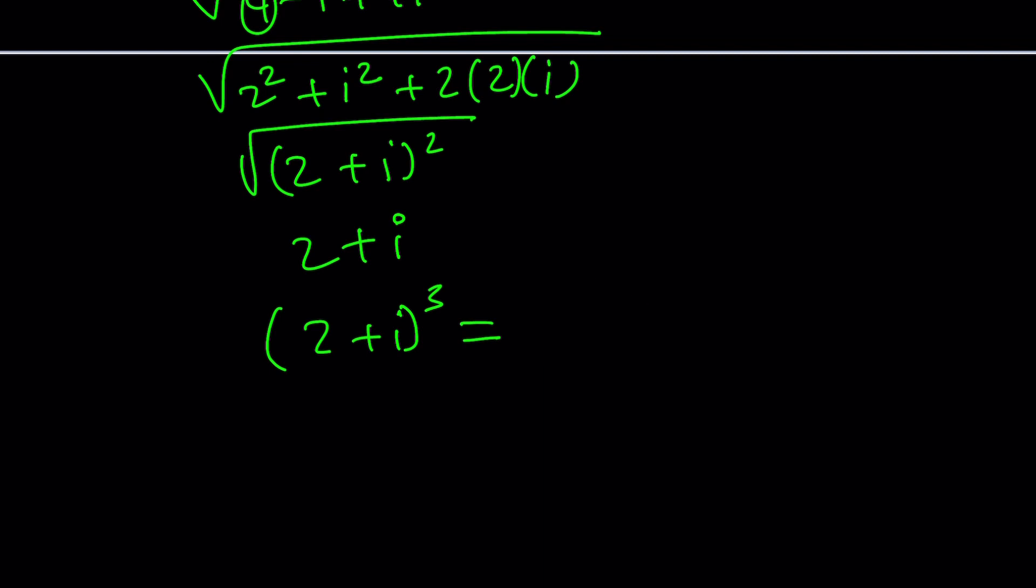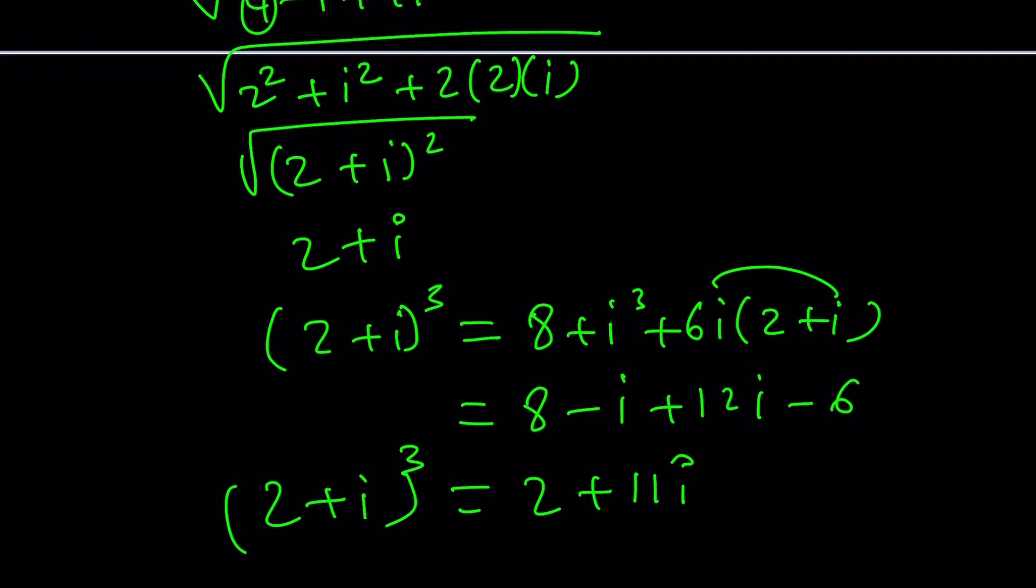Okay, let me use my formula. a cubed plus b cubed plus 3ab times a plus b. That's the formula I usually use. I don't like the binomial theorem. I mean, this is the binomial theorem, but I have a shortcut. i cubed is negative i. This is 12i. This is minus 6 because 6i squared. That is 2 plus 11i. Uh-oh. I got the answer. Houston, we got a solution. Yay.